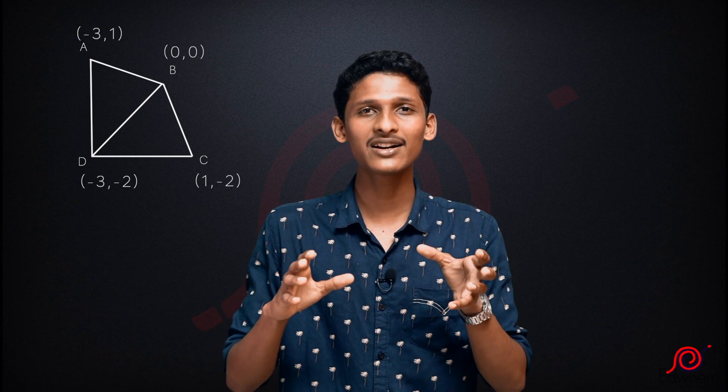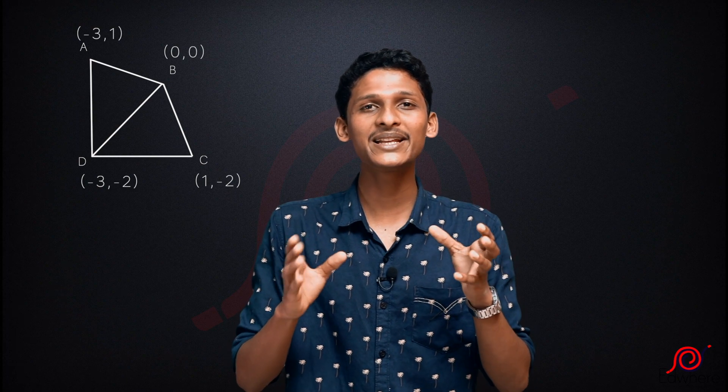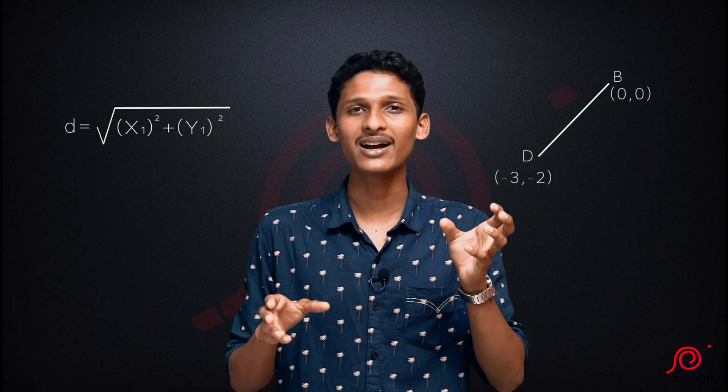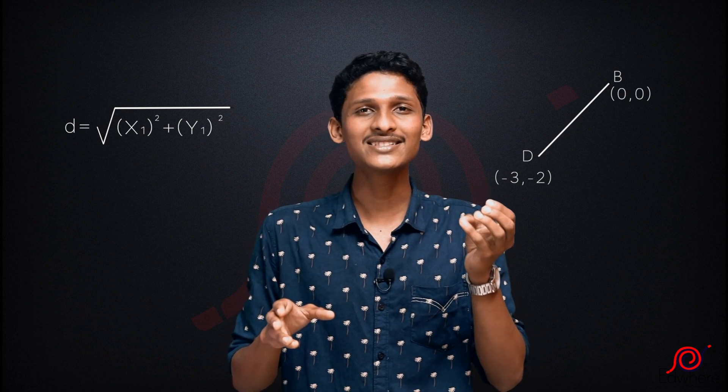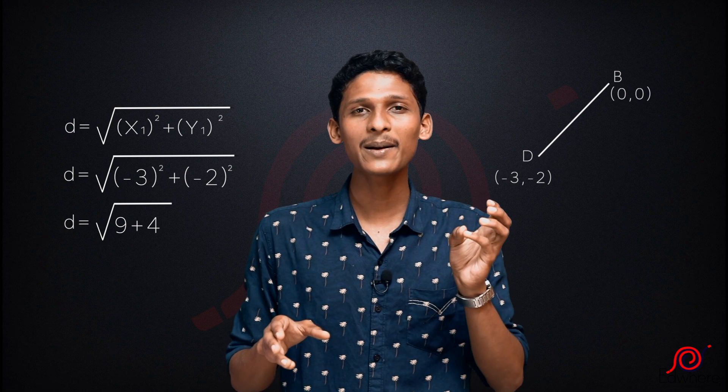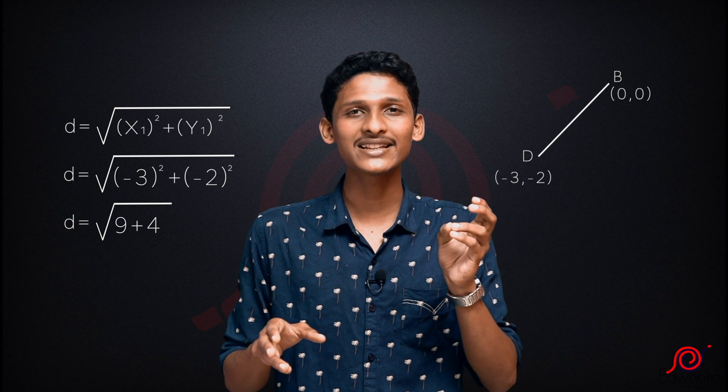Now we have the four sides. We will find the two diagonals. We will find the length of diagonal BD. Point B is (0, 0) and point D is (-3, -2). Since one point is the origin, we use: distance = root of (x1² + y1²) = root of ((-3)² + (-2)²) = root of (9 + 4) = root 13. So BD = root 13.